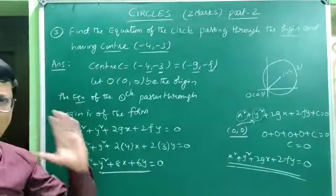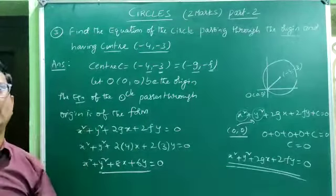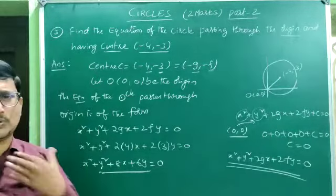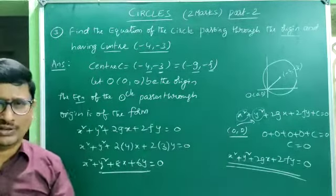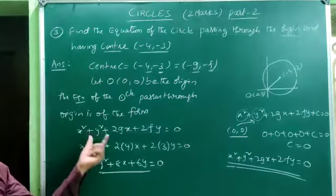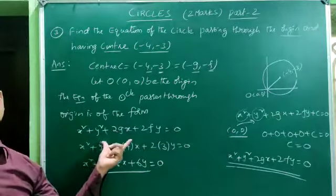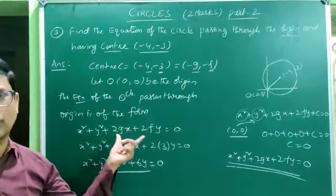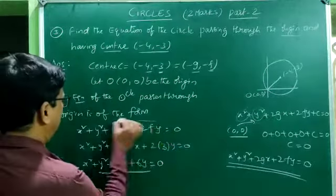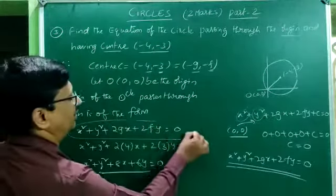Remember: the equation of the circle passing through the origin is of the form x² + y² + 2gx + 2fy = 0. There is no constant term — instead of c, the value is 0.